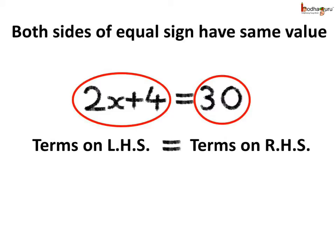2x plus 4 is equal to 30 is another equation. It says the value of 2x plus 4, which is on the left hand side of the equal sign, is the same as 30, which is on the right hand side of the equal sign. So, remember children, in an equation, the left hand side is equal to the right hand side of the equal sign.